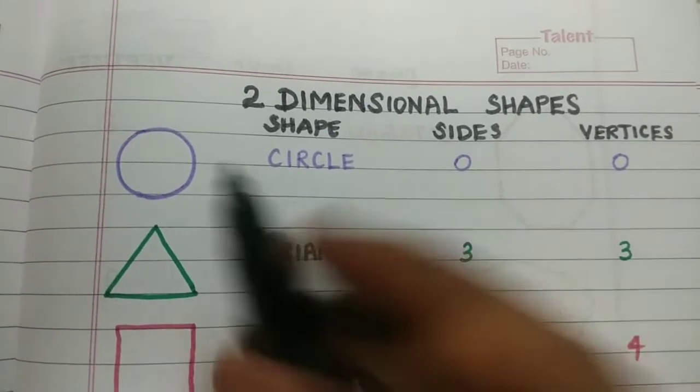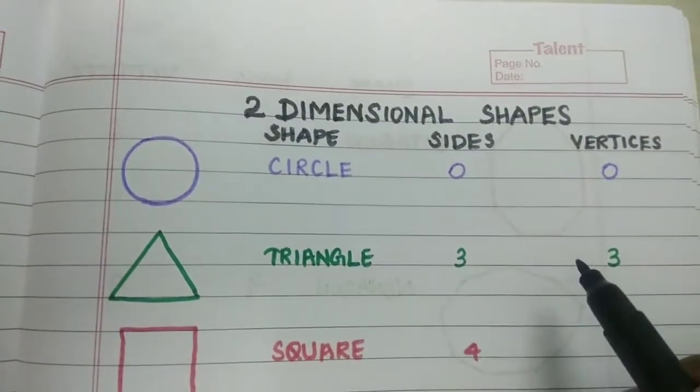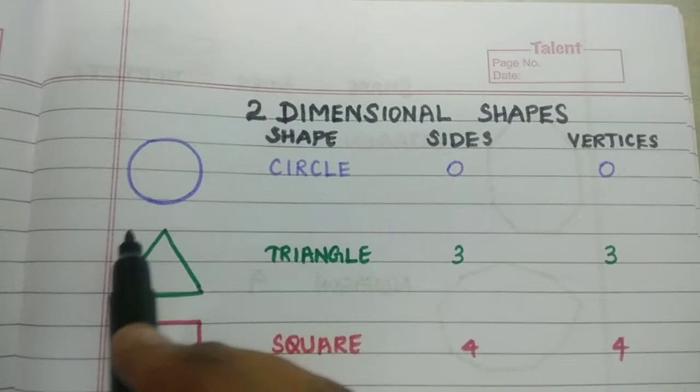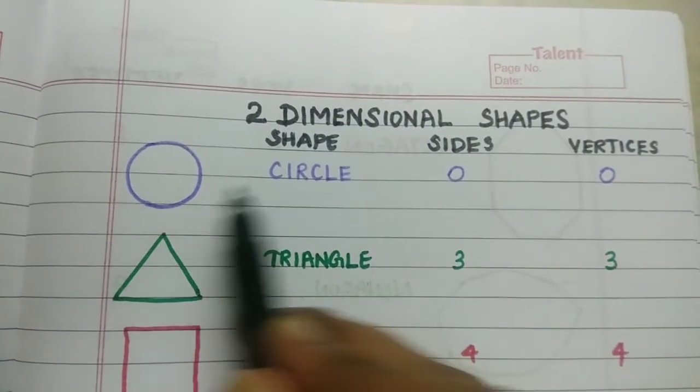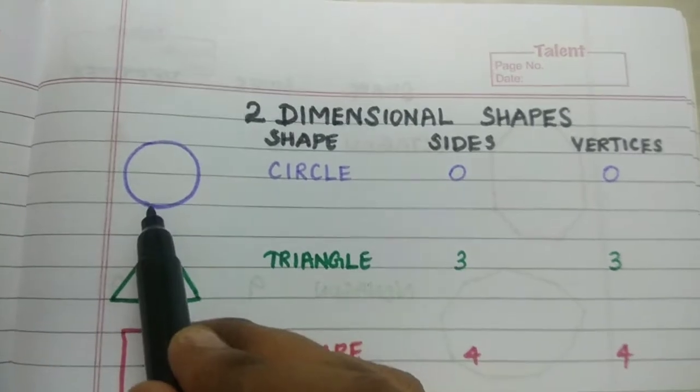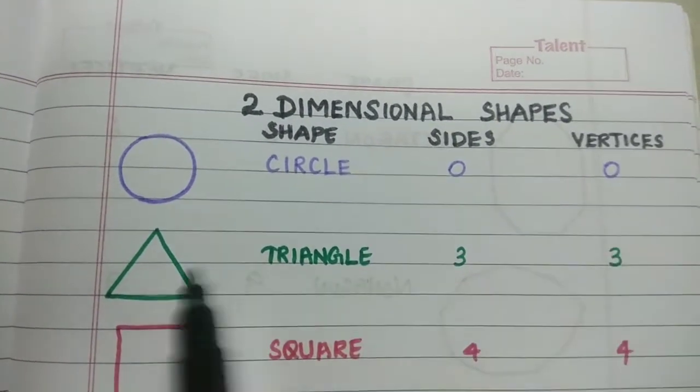So for each shape, we will see how many sides and vertices are present. So let's learn first what is a circle. Circle has zero sides and zero vertices.